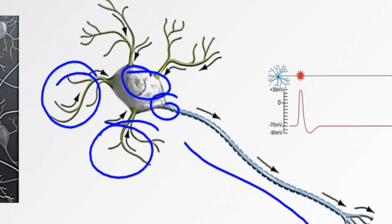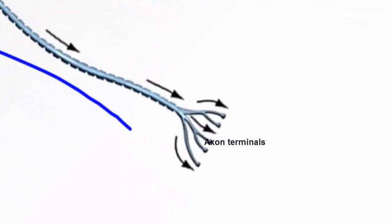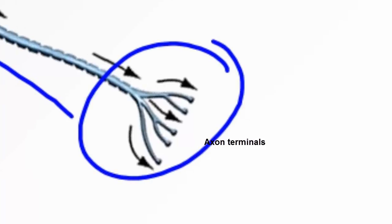The last region of the axon is the axon terminals. Axon terminals are specialized structural areas known as synapses. These synapses are capable of communicating with other cells by releasing chemical signals known as neurotransmitters.